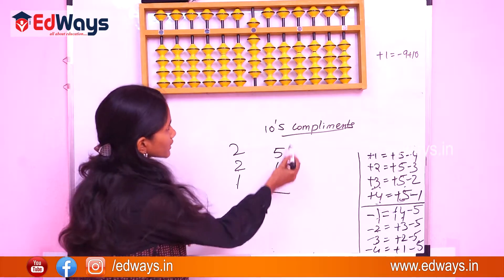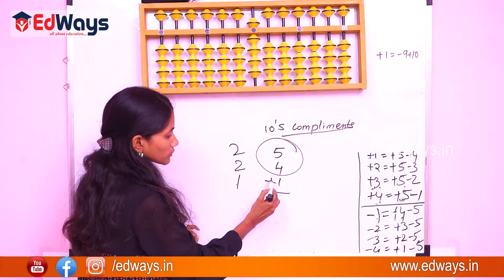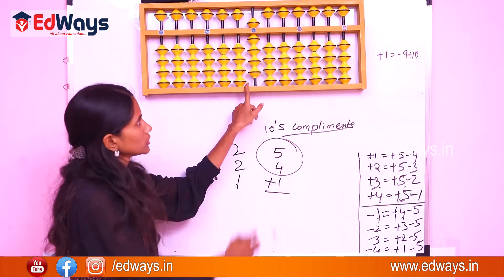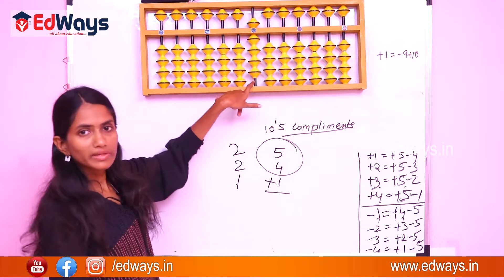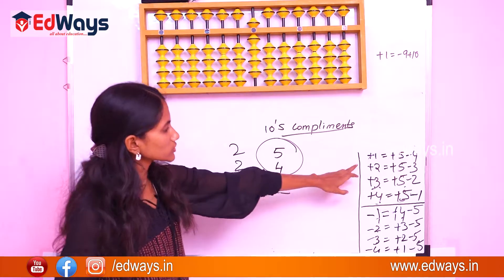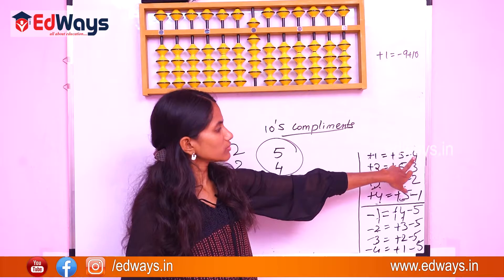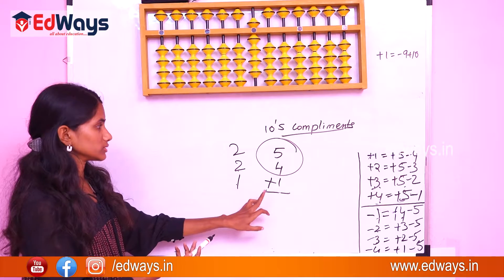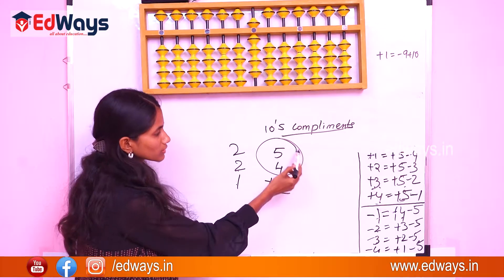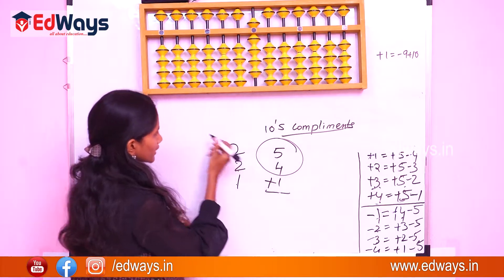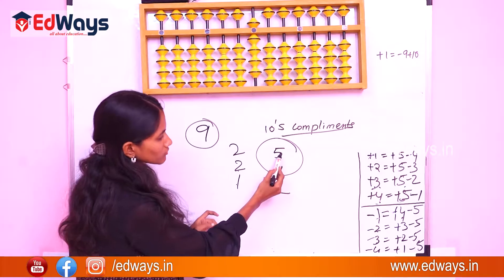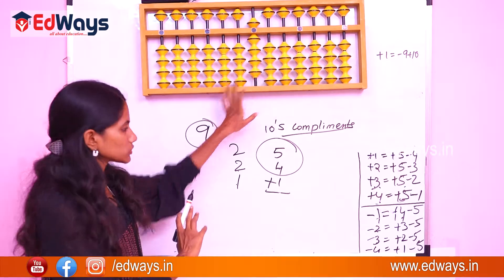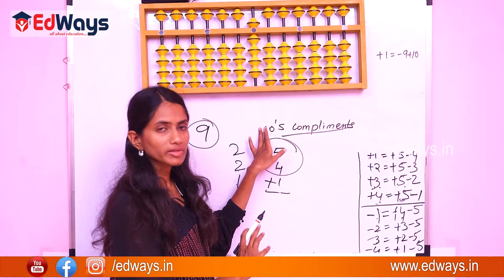We have got 9. But now we have to add plus 1. Can we add it directly? No, because we cannot add one bead upward. Can we use fives complement? Plus 1 equals plus 5 minus 4 — but that is also not possible. So this is a case where the sum involves numbers more than 9, and we need to discuss tens complements.